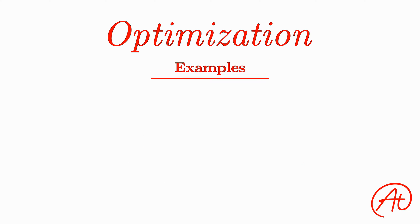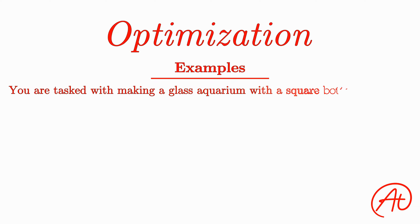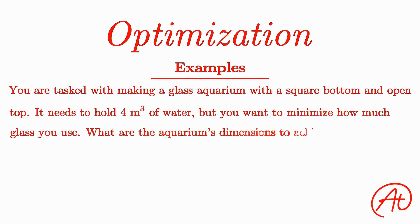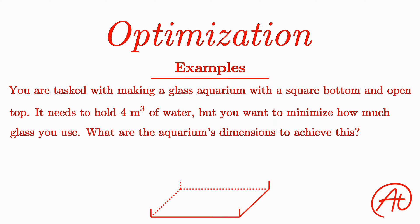For example, you might be asked to create a glass aquarium with a square bottom and open top. It needs to hold 4 cubic meters of water, but you also want to minimize how much glass you have to use. Using calculus, you can find the exact dimensions of the aquarium to achieve this.